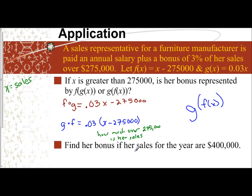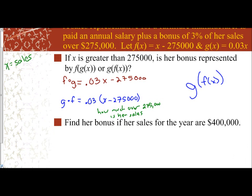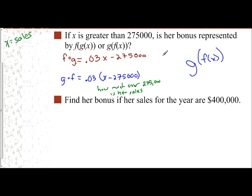So now we're asked to find her bonus if her sales for the year are $400,000. So I've already written down what g(f(x)) was. It's 0.03 times x minus $275,000. But here I'm told x is $400,000. That's how much her sales were.